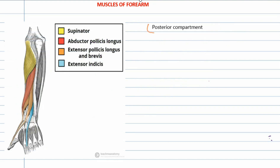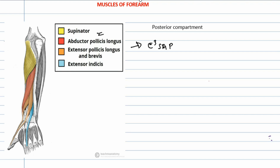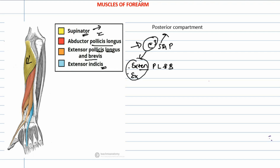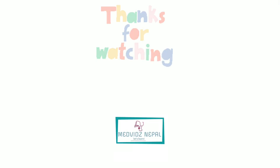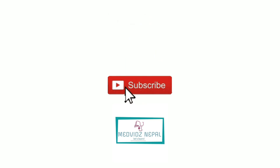Now let's talk about the 5 muscles of the deeper plane of the posterior compartment. We have: supinator, abductor pollicis longus, extensor pollicis brevis, extensor pollicis longus, and extensor indicis. These are remembered through the mnemonic 'E-cubed SAP' — three E's for extensor indicis, extensor pollicis longus, and extensor pollicis brevis; 'S' for supinator; and 'AP' for abductor pollicis longus.